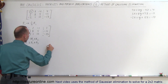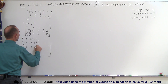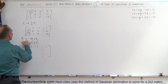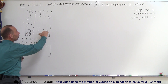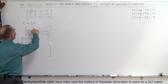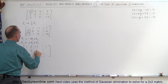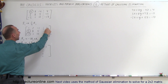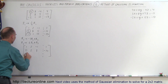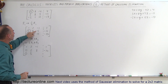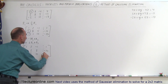The first row doesn't change: 1, 2, negative 1, and 1. For row 2: negative 3 times 1 plus 3 gives 0; negative 3 times 2 plus 8 gives 2; negative 3 times negative 1 plus 5 gives 8; and negative 3 times 1 plus minus 11 gives minus 14. For row 3: 2 times 1 plus minus 2 gives 0; 2 times 2 plus 1 gives 5; 2 times negative 1 plus 12 gives 10; and 2 times 1 plus negative 17 gives negative 15.